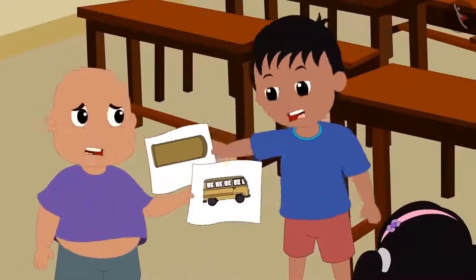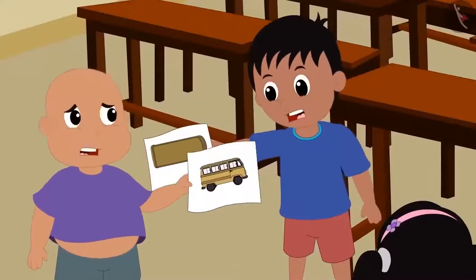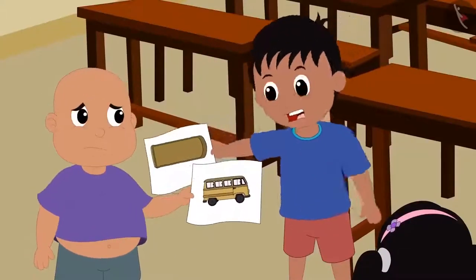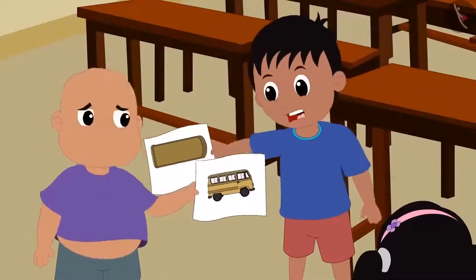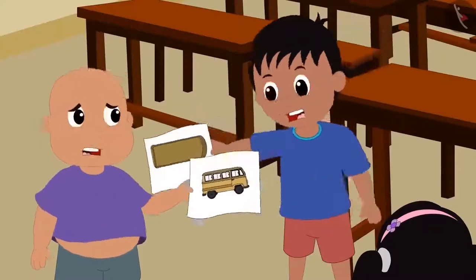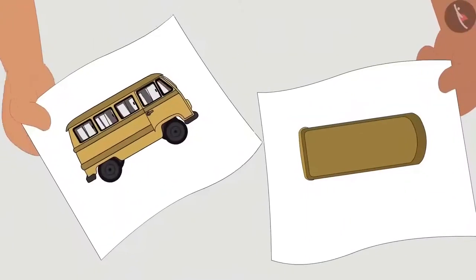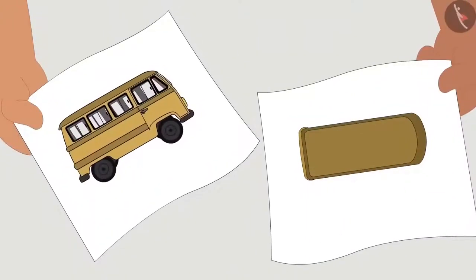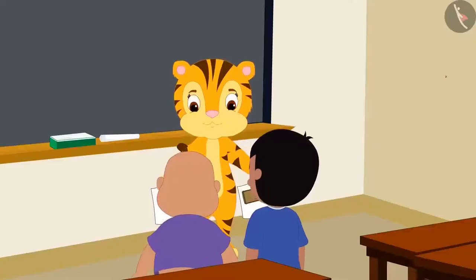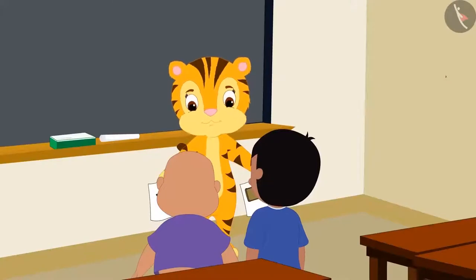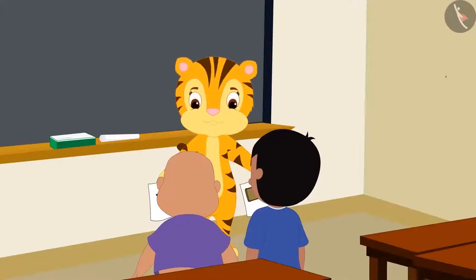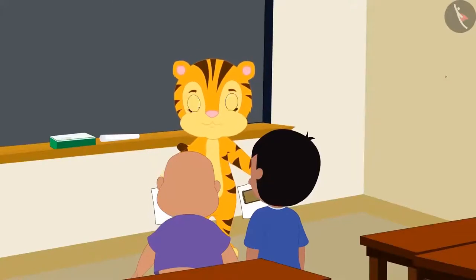Next day — Raju and Bablu are fighting. But why? On enquiry, it was found that both of them had made different pictures of the same bus, and both are fighting about whose drawing is correct.